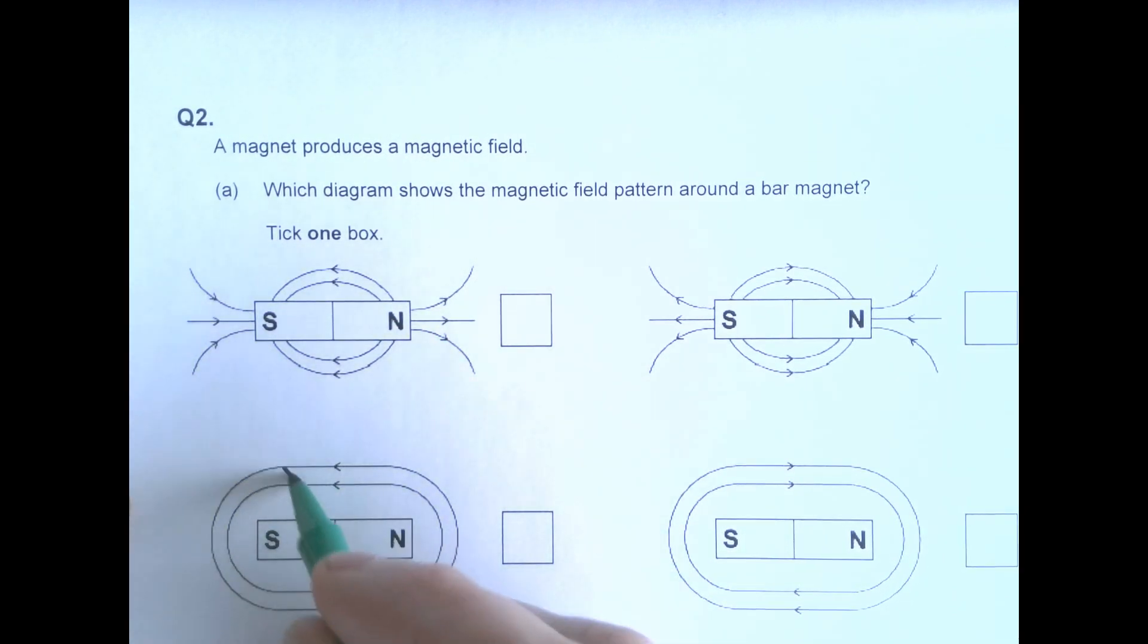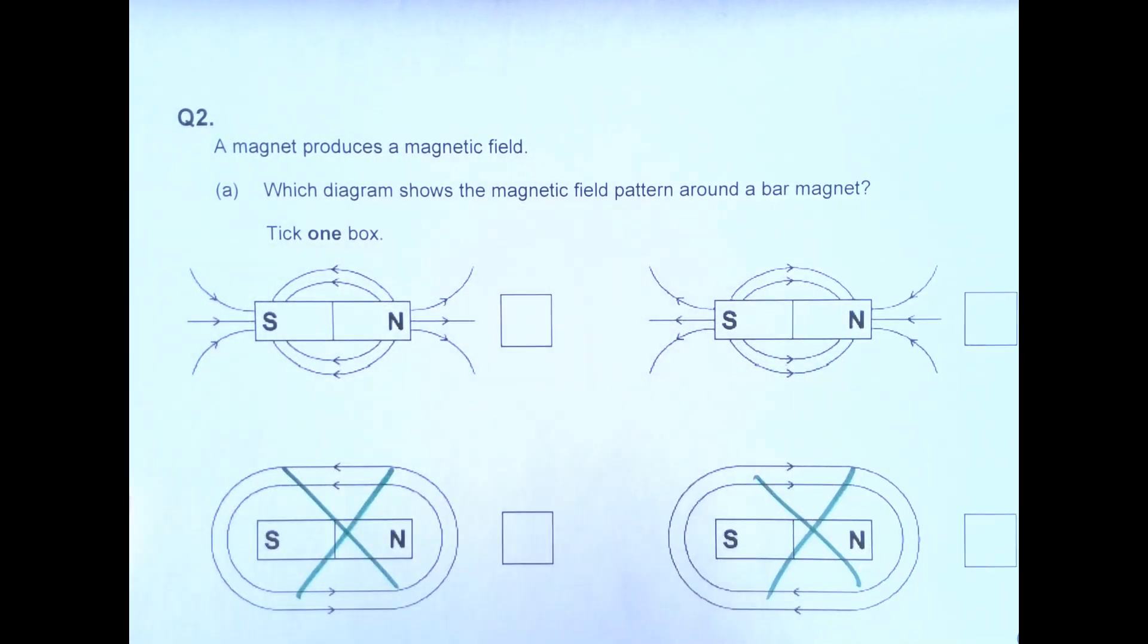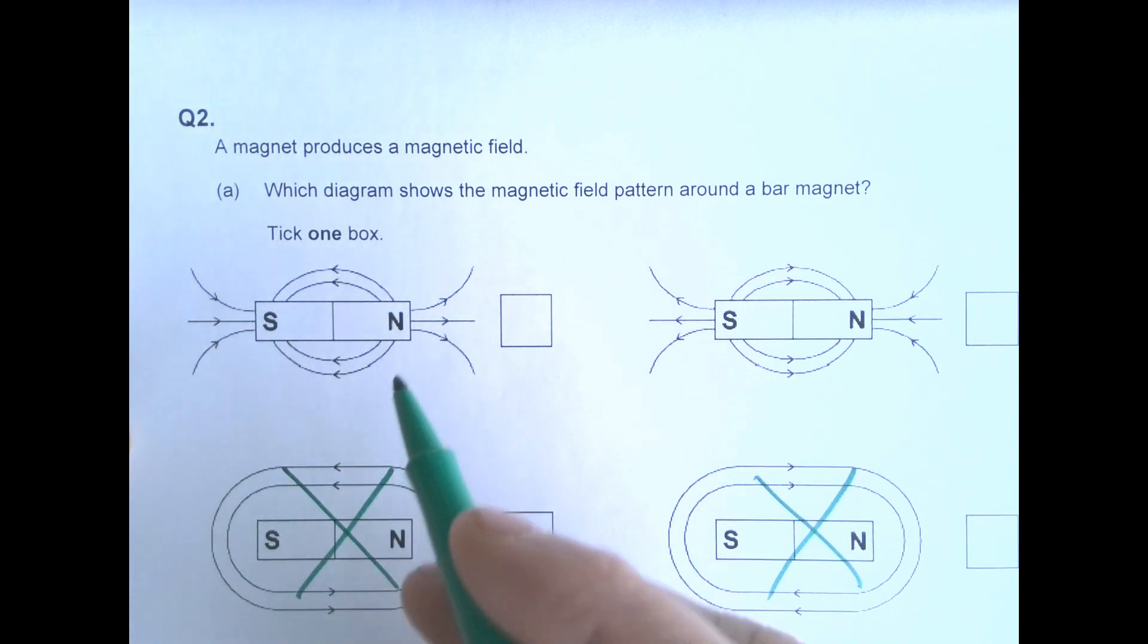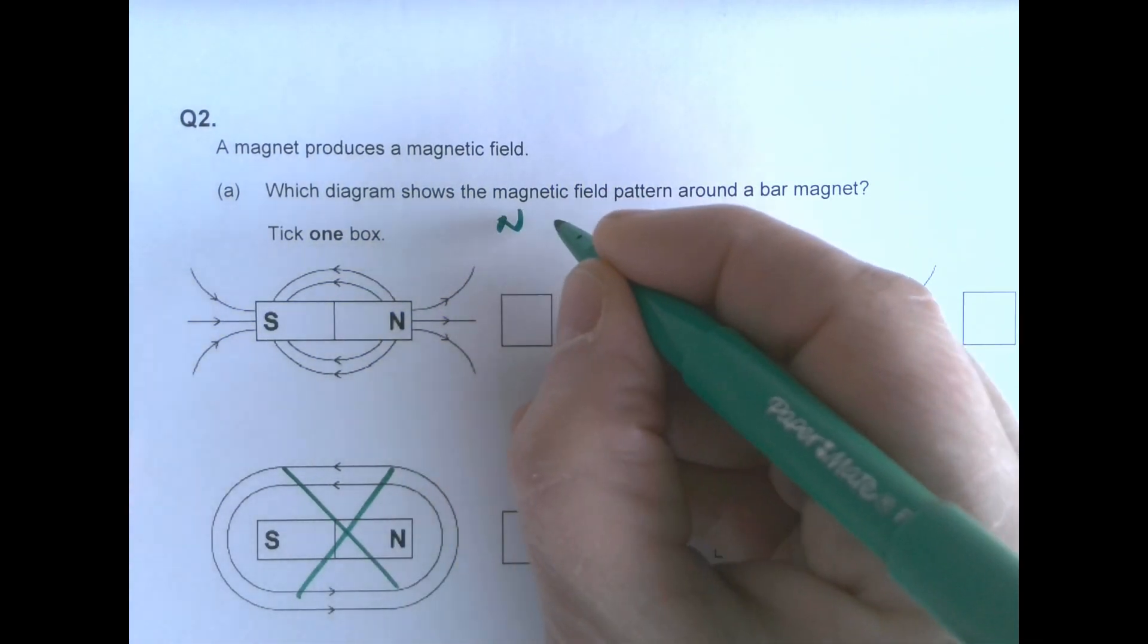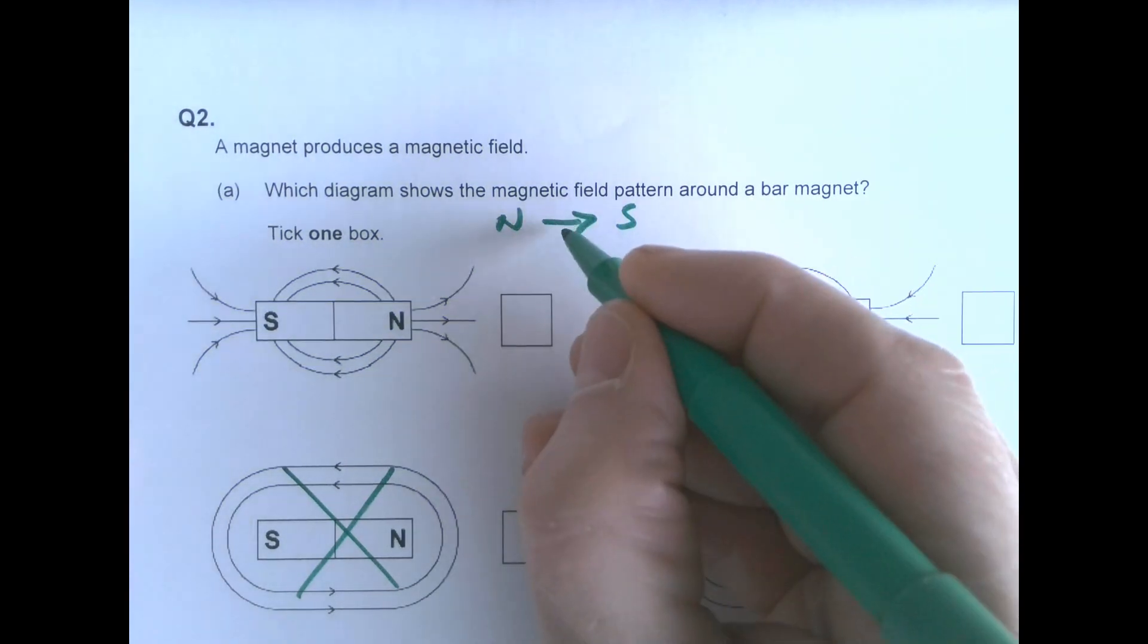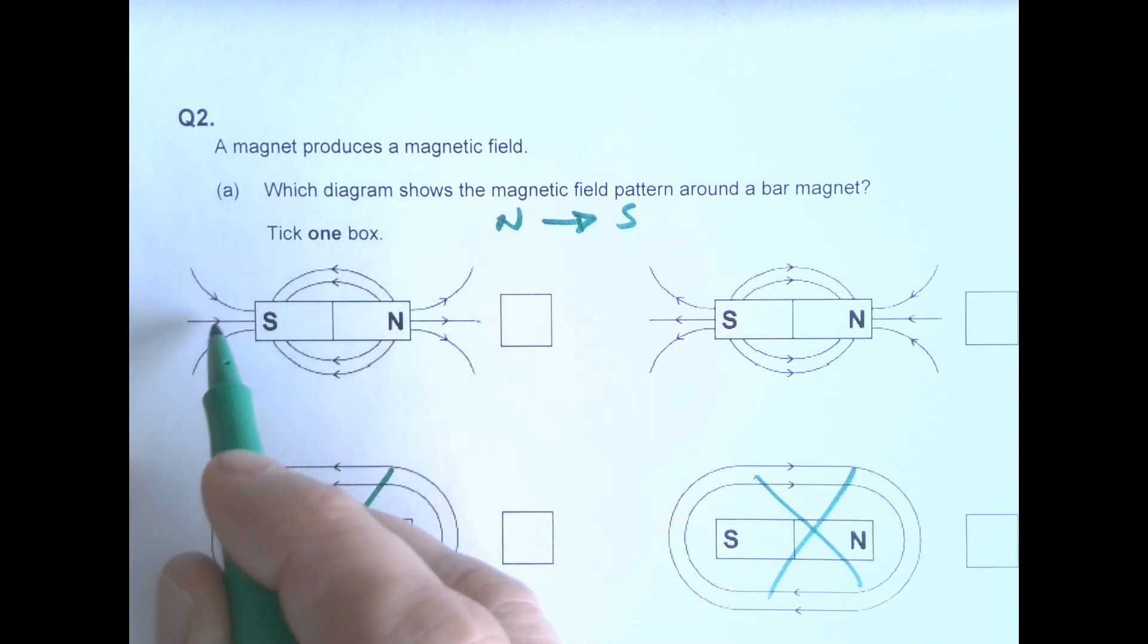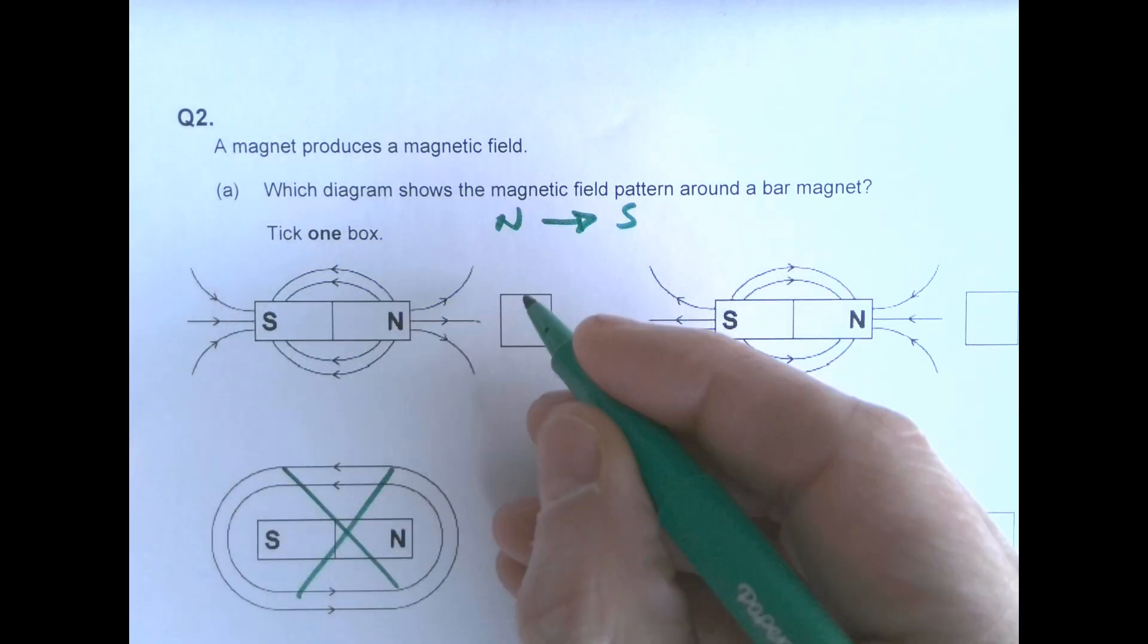So we know hopefully it's not either those two. So it's going to be one of these two here. And we need to remember that always for magnetic fields, it always goes north to south. The arrows always go from north towards south. So here these arrows are going from north towards south. So it's that first one there.